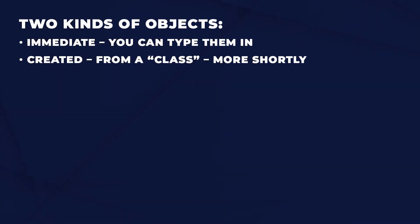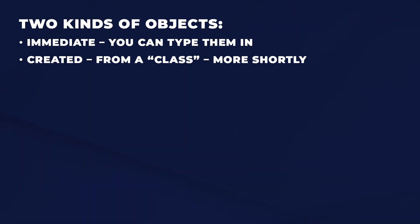There are a couple kinds of objects. There's an immediate object, which is one you can type in — so if you type in 5, that's an integer object. And then there are objects that are created from a class, which we'll get into. When you create your customer object, you'll create a class that defines that object. But other things like numbers and strings, you can simply type in.